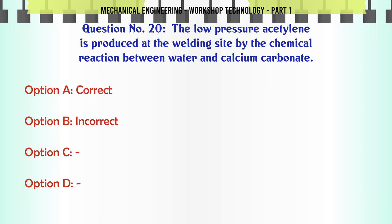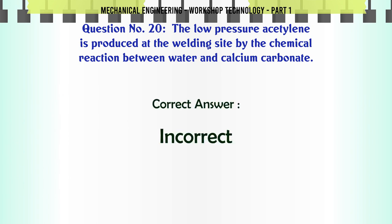The low-pressure acetylene is produced at the welding site by the chemical reaction between water and calcium carbonate. A. Correct. B. Incorrect. The correct answer is: Incorrect.